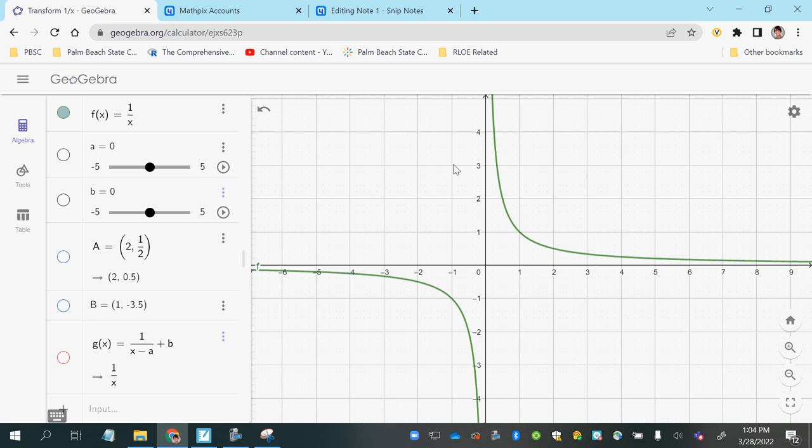And you should know to expect this shape because this is a rational function. This is one of the common functions that we want to be familiar with the general shape. And so this is the most basic form of it, the parent function 1 over x.